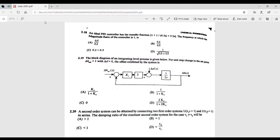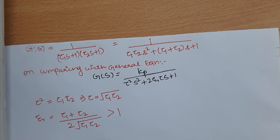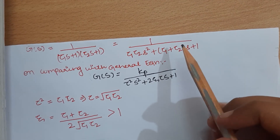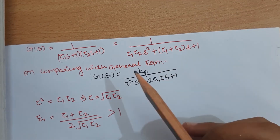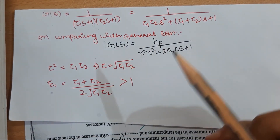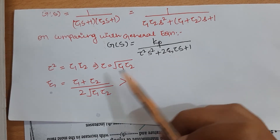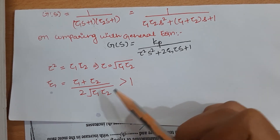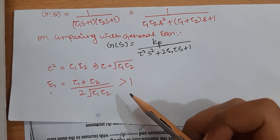Question 2.20: a second-order system is obtained by connecting two first-order systems in series. The damping ratio of the resultant second-order system for τ₁ ≠ τ₂ is to be found. The combined transfer function gives τ = √(τ₁τ₂), and the damping ratio ζ = (τ₁ + τ₂)/(2τ). For τ₁ ≠ τ₂, ζ is greater than 1.